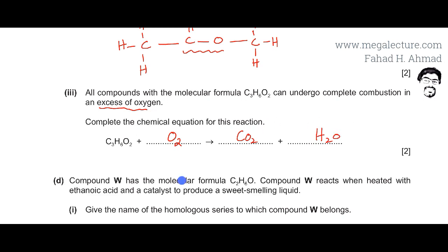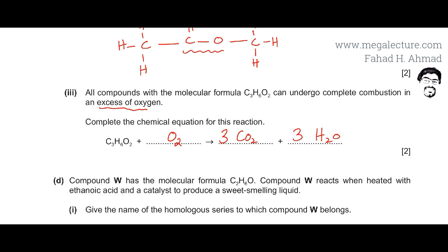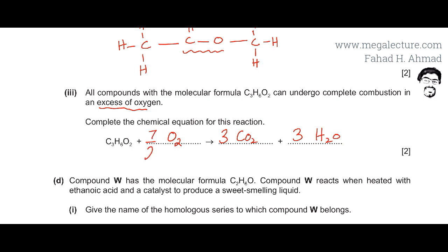We need to balance this combustion equation. Start with carbon: there are 3 carbons, so there should be 3 CO2 on the other side. Then hydrogen: there are 6 hydrogens, so multiply water by 3 to get 6 hydrogens. Now count the oxygens on the right side: 6 from CO2 and 3 from water gives a total of 9 oxygens. There are already 2 in the compound, so we need 7 more oxygens from O2.